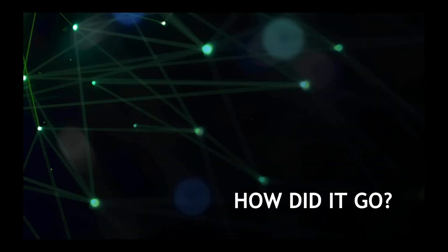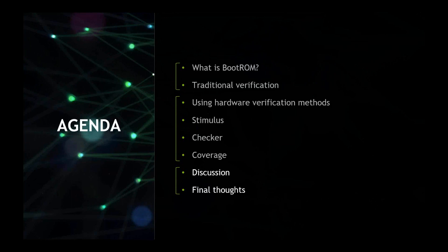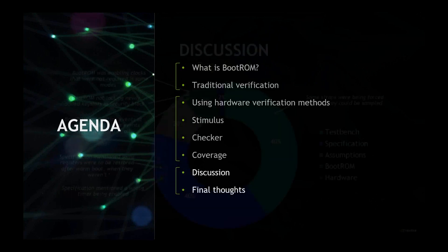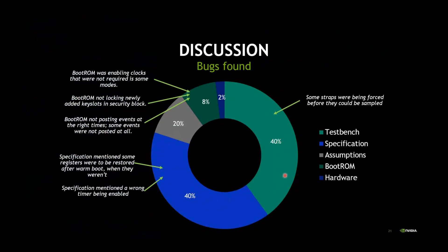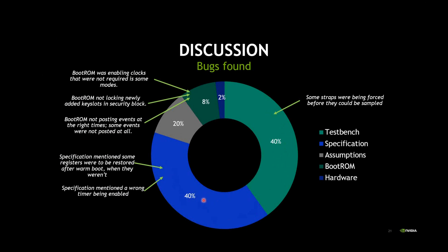So how did it go? We found quite a few bugs. We found bugs in our test plan itself and in the specification — for example, the specification said certain registers should be restored after warm boot, but they were not all getting restored in the real boot ROM. We found quite a lot of bugs in the boot ROM itself: the boot ROM was enabling clocks not required for certain modes, and was not locking all the security key slots it should have. In the process, we also found a few hardware bugs — indirect verification of hardware through boot ROM verification.